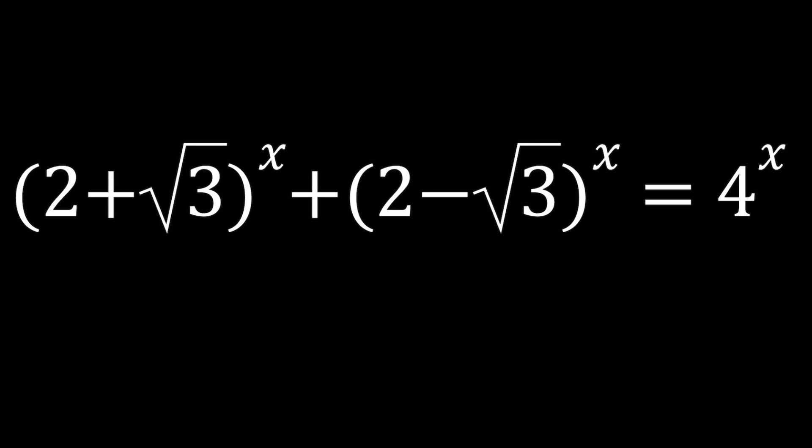Hello everyone. In this video we're going to be solving an exponential equation with radicals. We have $(2+\sqrt{3})^x + (2-\sqrt{3})^x = 4^x$ and we're going to be solving for x values.